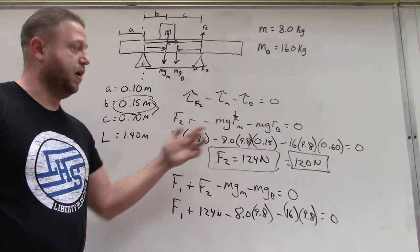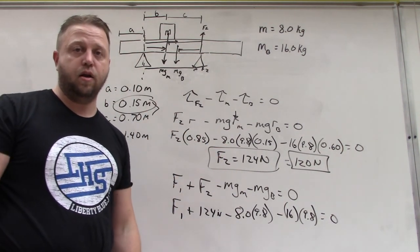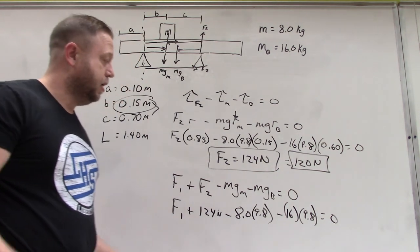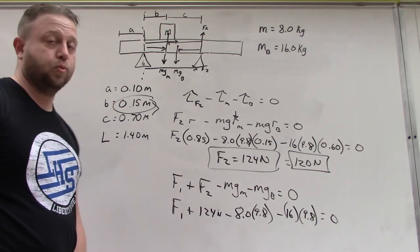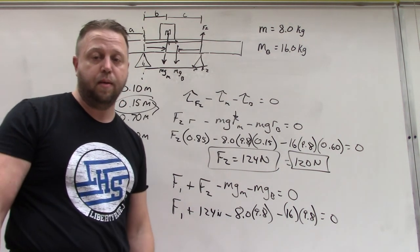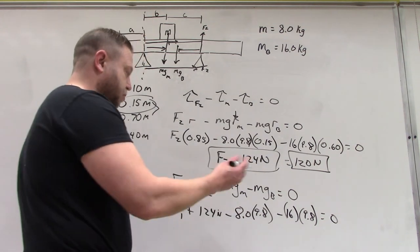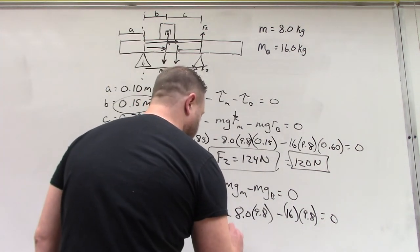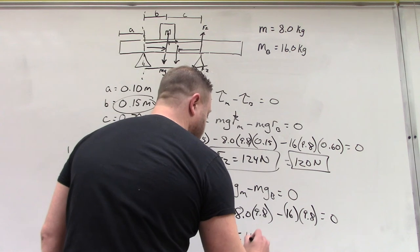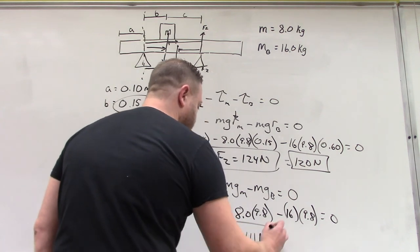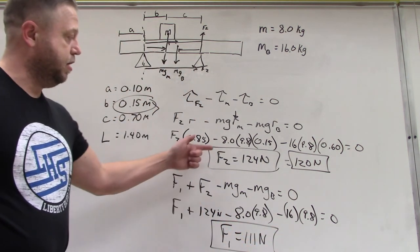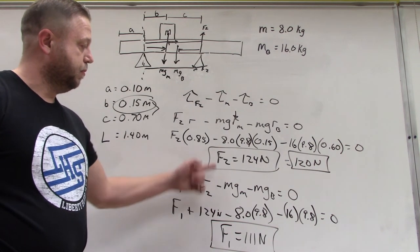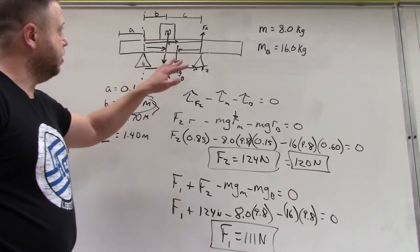This is a lot easier to do than setting up a torque equation. Torque equations take longer because you've got to think about all of the radii and masses. This is easier because all we have to do is think about straight up and down. If I stick with three sig figs like I was using before.